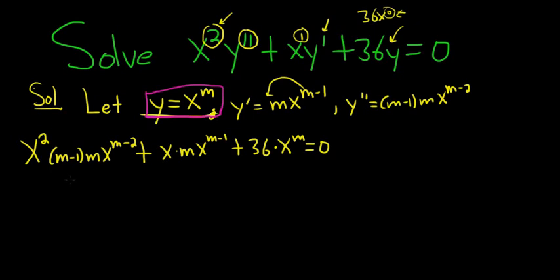At this point, you want to group together all the x's. So basically, we have x squared and x to the m minus 2. So when we multiply these, we add the exponents. So m minus 2 plus 2 is m. So we have x to the m, I'll put it in the front, m minus 1 times m.